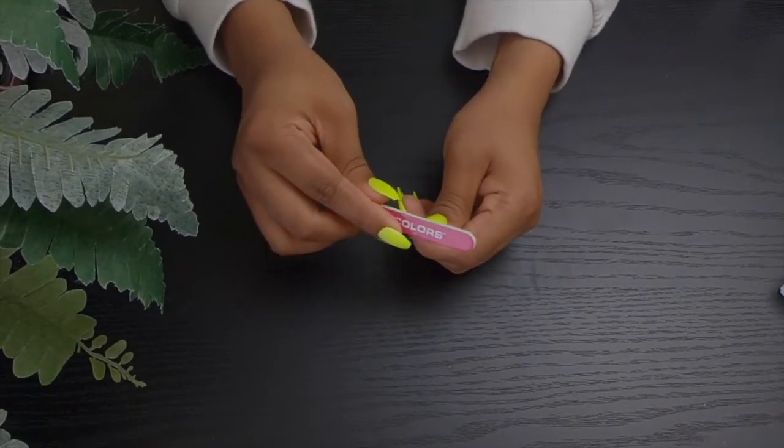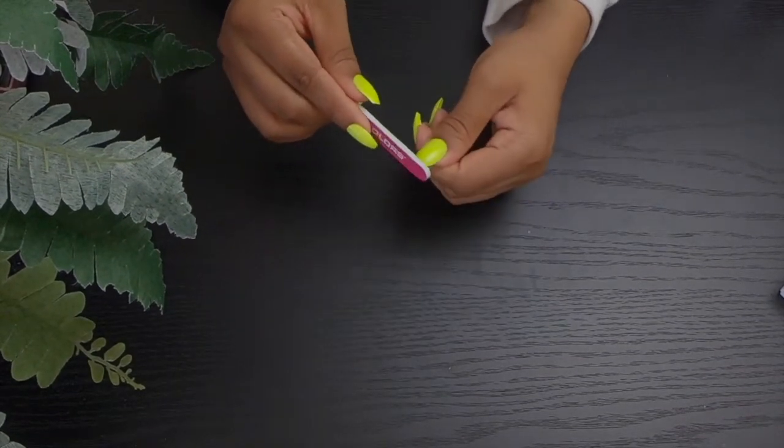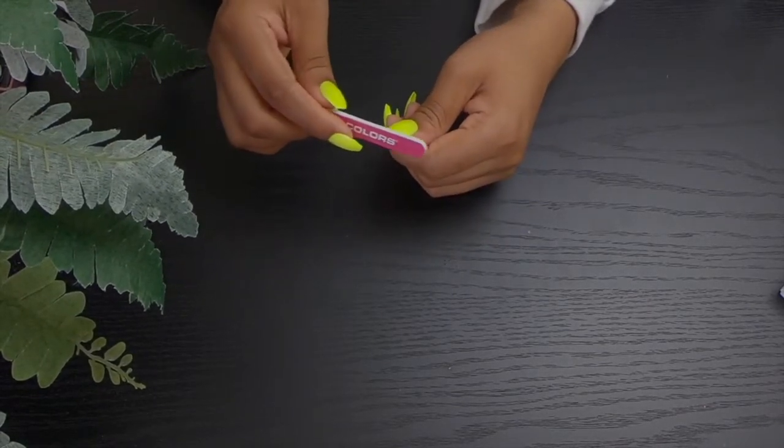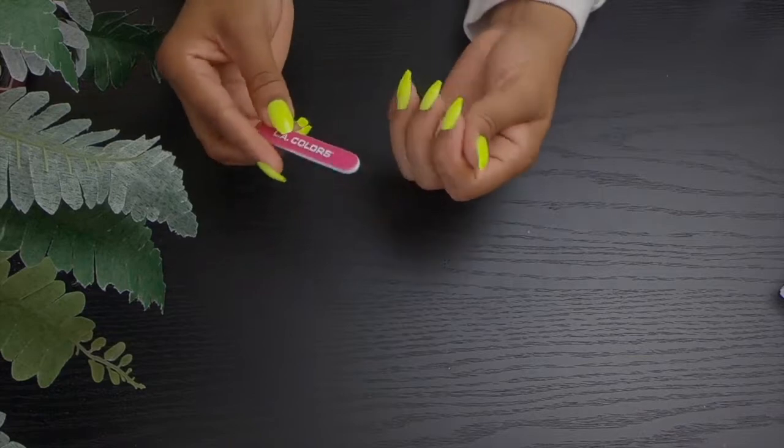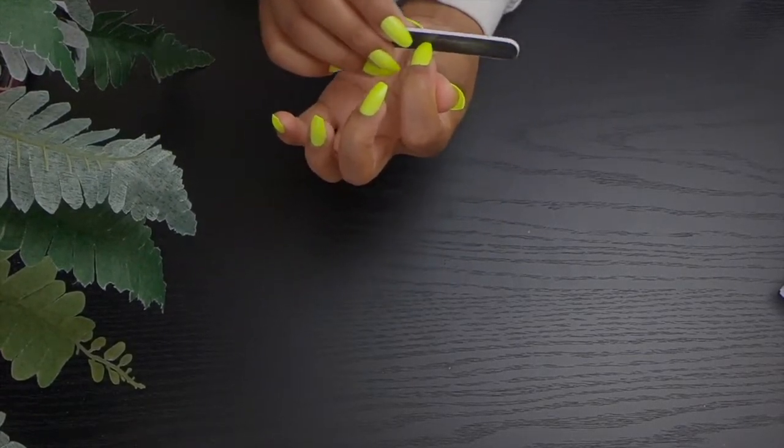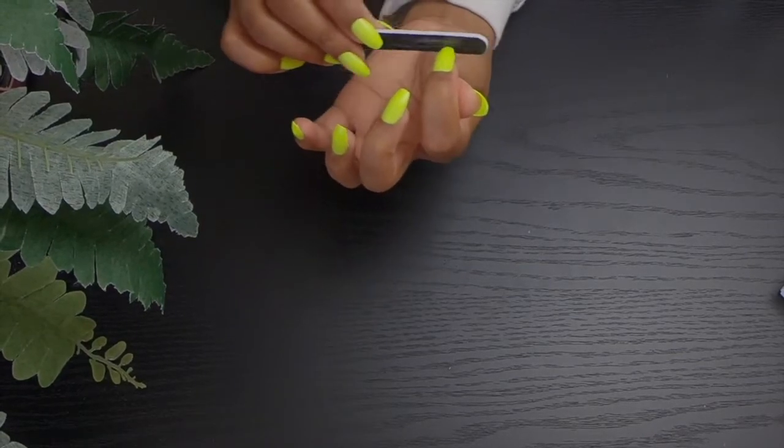Now I'm going in with a file that came in the nail kit. I'm just using this to shape the nails a little bit and also to get rid of that little hump, that little extra piece that comes on the nails when you get them. I'm doing that on all nails and making sure that I reshape them so they have the shape that I like.